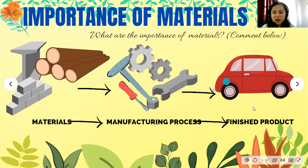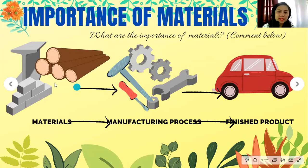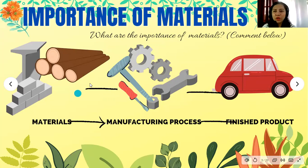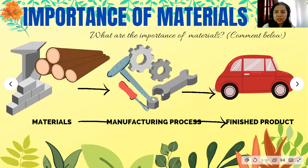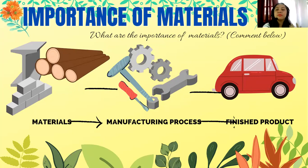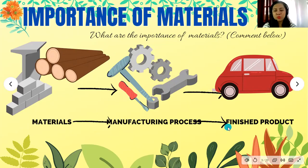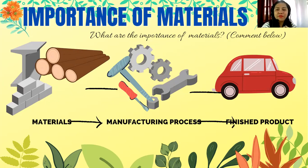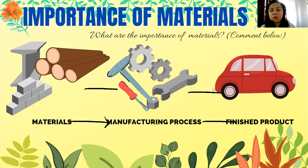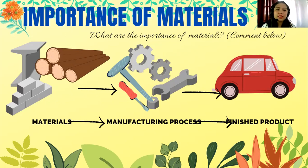Before this finished product, we need to have proper materials. Then, with proper materials, we will proceed to manufacturing processes. After manufacturing processes, before the finished product, there are appropriate designs and more. There are a lot of processes before we get a finished product, but before all of that, materials are always consumed first.